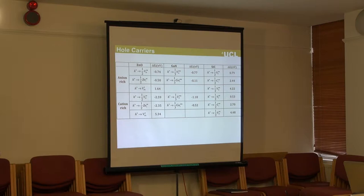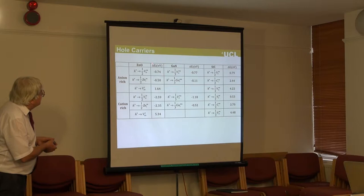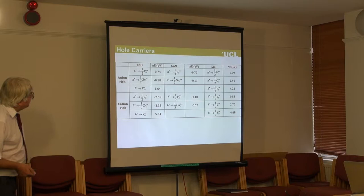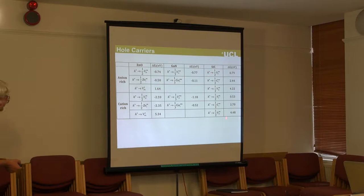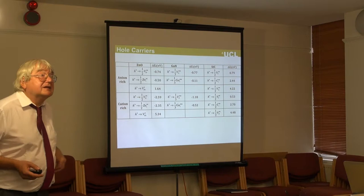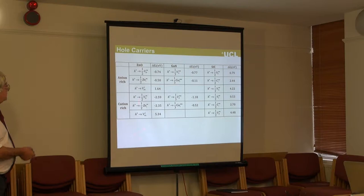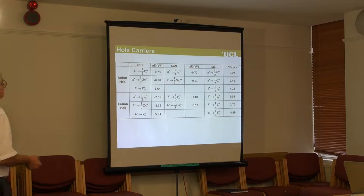Electrons are stable in all three materials — exactly what you see experimentally; we all know these materials are very easy to donor-dope. Now let's look at holes. If you try to acceptor-dope zinc oxide to introduce holes — and there's a huge literature trying to do this — it's thermodynamically favourable for those holes to undergo a redox reaction in which hole compensation is replaced by oxygen vacancies. The same is true for gallium nitride, but not for silicon carbide.